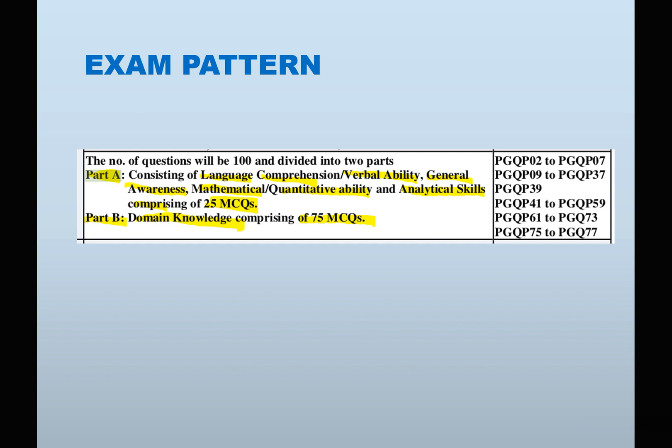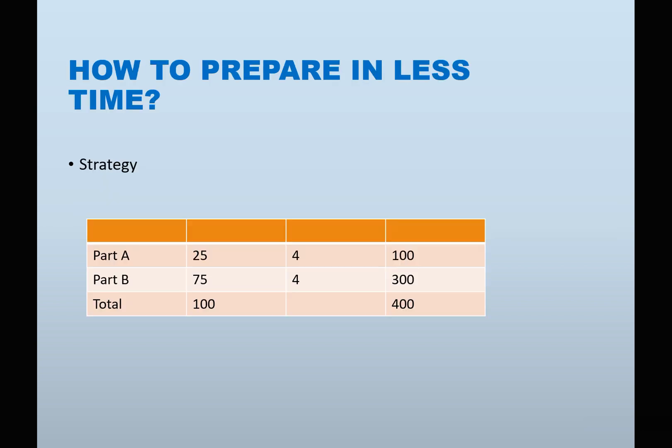Now build a strategy for yourself. Time is less but you can prepare properly. Part A is of the general part with 25 questions, each question carrying 4 marks, so total marks for Part A is 100. Part B consists of 75 questions, one question is 4 marks, so total marks is 300.